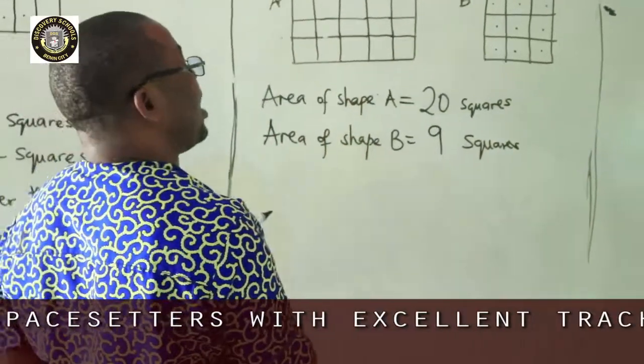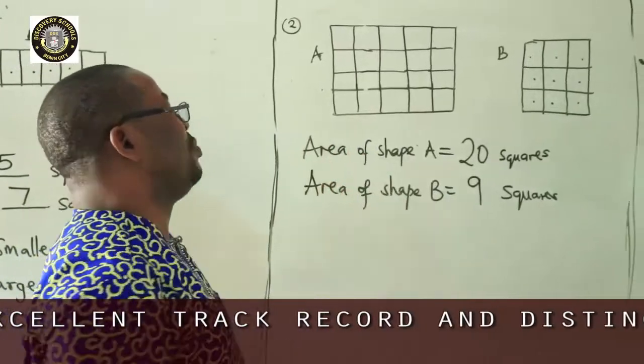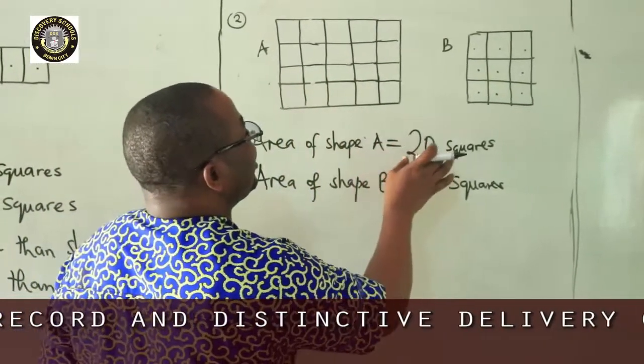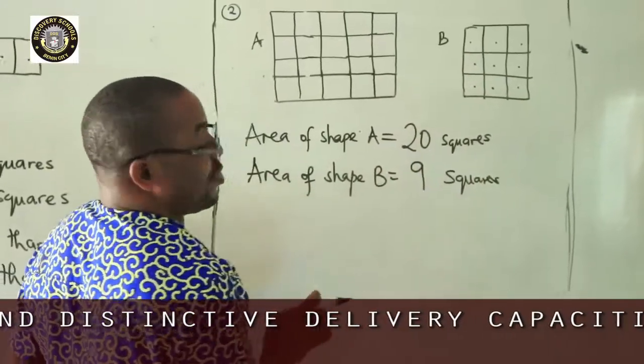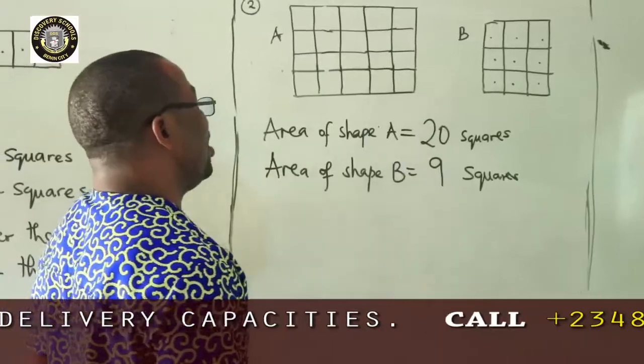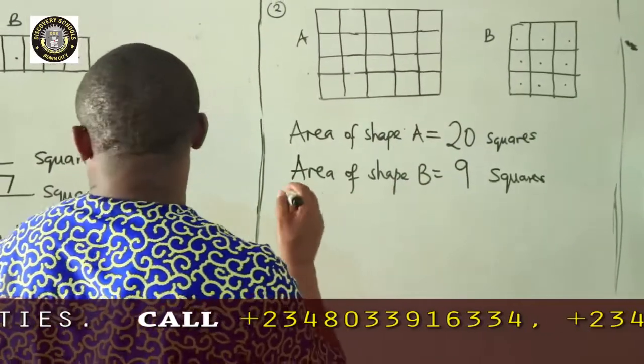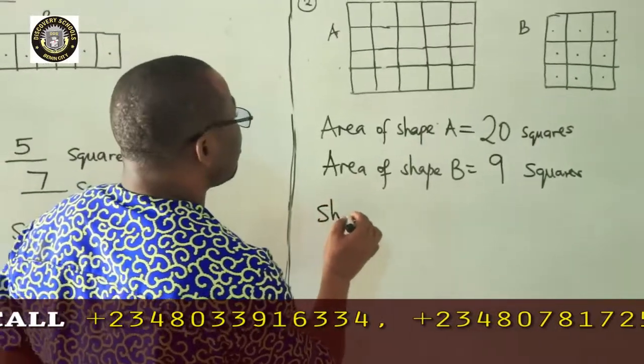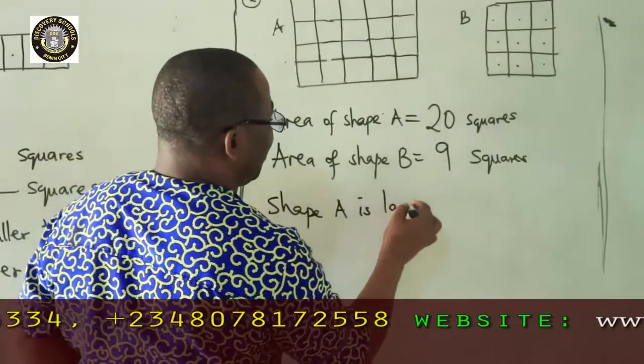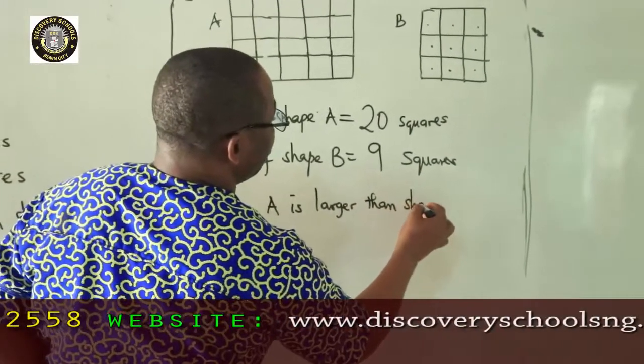Area of shape A is 20 squares and B is 9 squares. So children, which of them is bigger? Shape A has the larger squares. So it's 20. Shape B has the smaller squares. 9. So, shape A is bigger than shape B. And shape B is smaller than shape what? A.